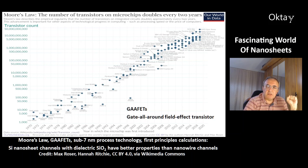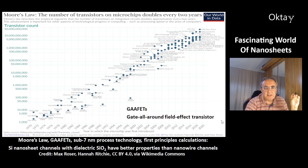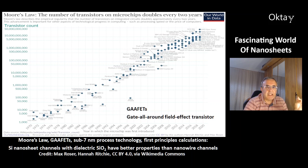This is a diagram of Moore's law — you can see over five decades, from 1970 to 2020, a logarithmic increase in the number of transistors on the y-axis, with a doubling every two years on a microchip. The current technology is called GAAFET — gate-all-around field-effect transistor — a sub-7 nm process technology. First-principles calculations show that silicon nanosheet channels with dielectric silicon dioxide could have better properties than nanowire channels of the same material.